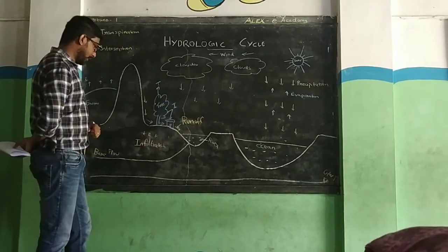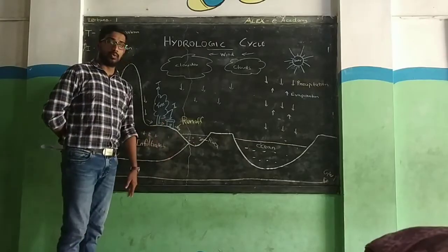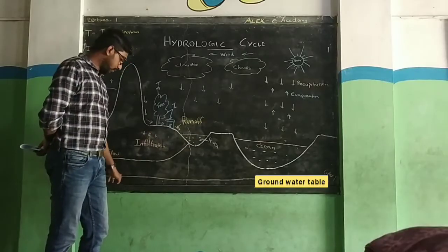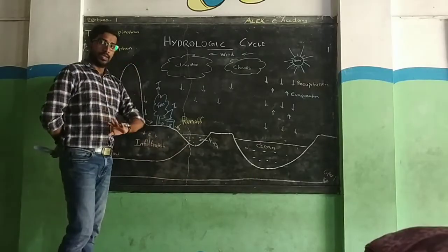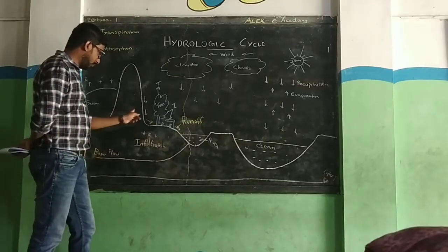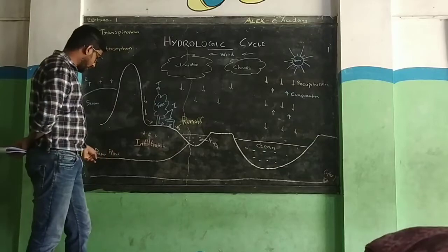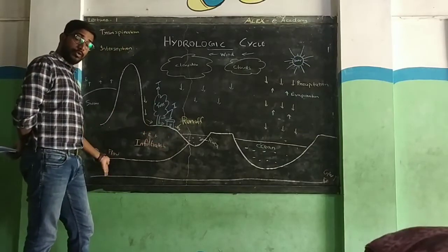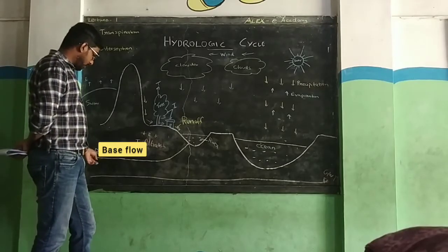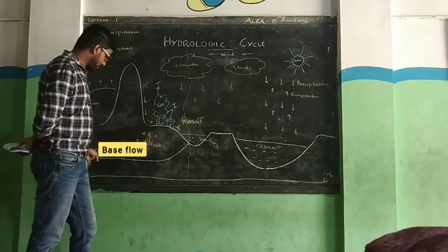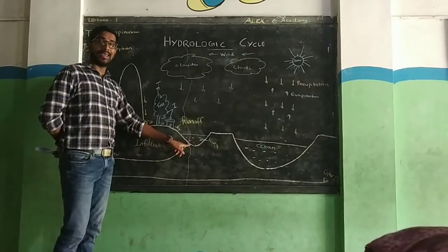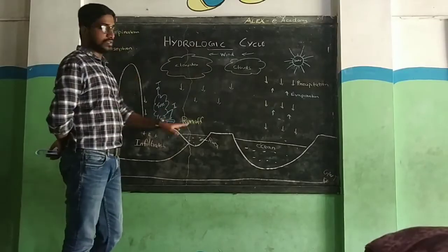Now, some water goes into the ground water. We have ground water — that's what we call ground water. The water after infiltration has one point called base flow. The base flow is the movement of water below the ground surface. The base flow feeds streams and rivers, and overall we call this the hydrologic cycle.